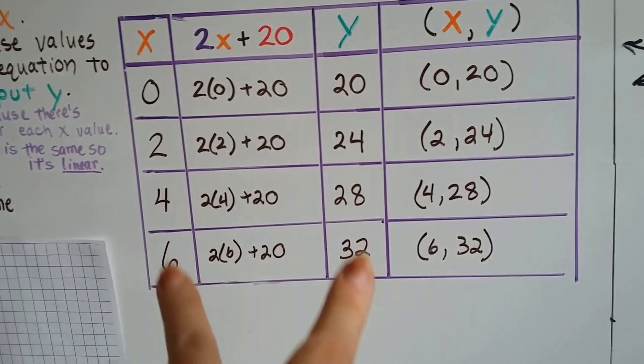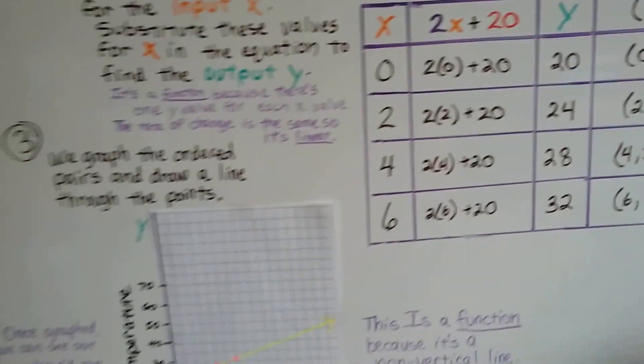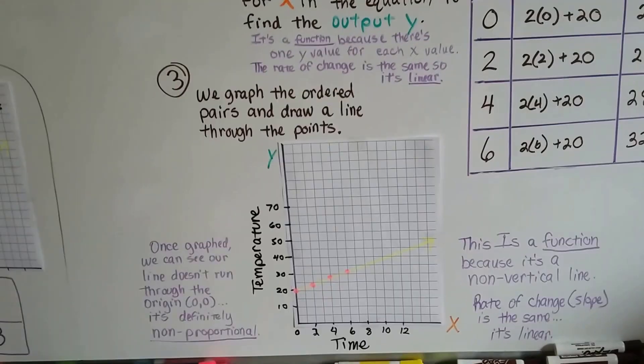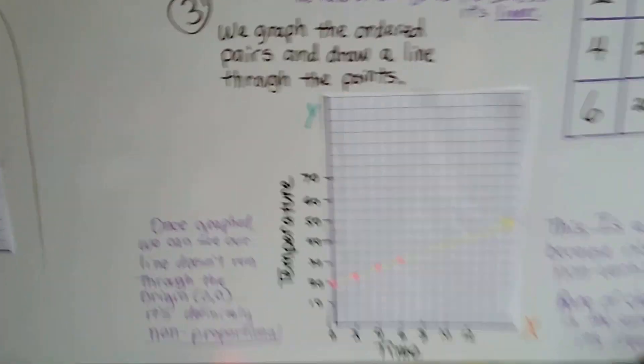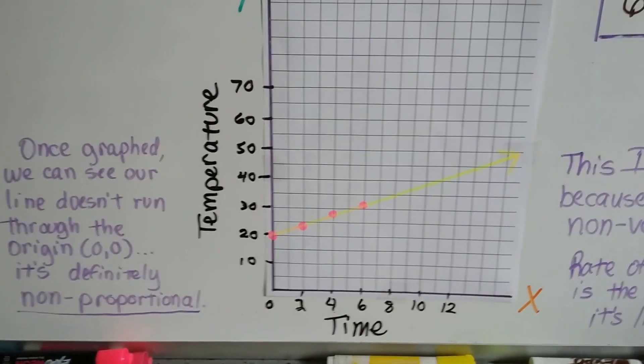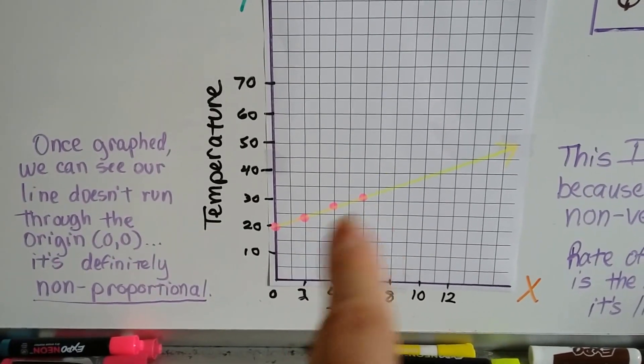We can plot these when we graph the ordered pairs and draw a line through the points. I made the line with yellow because I wanted you to be able to see the points.